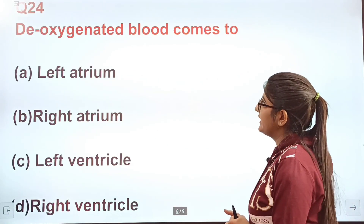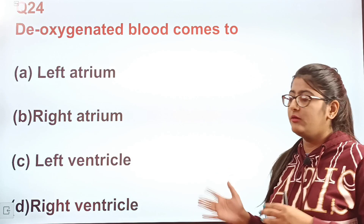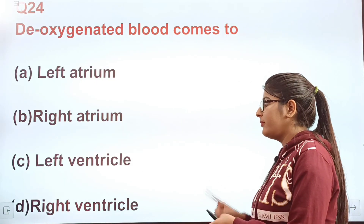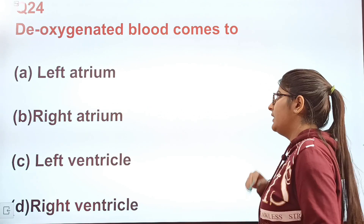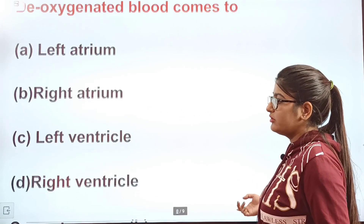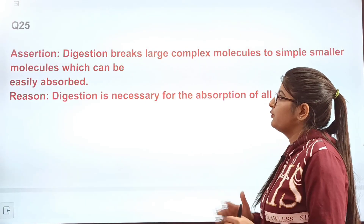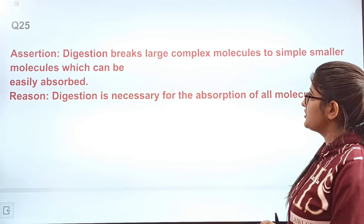Question 24: Deoxygenated blood comes to — left atrium, right atrium, left ventricle, or right ventricle?